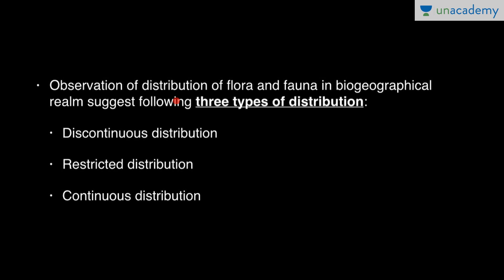Observation of the distribution of flora and fauna in biogeographical realms suggests three types of distribution: discontinuous distribution, restricted distribution, and continuous distribution.